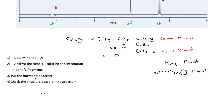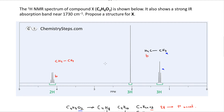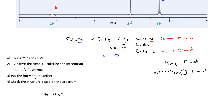Whenever you see a quartet and a triplet together, you should immediately think of an ethyl group — these two signals represent an ethyl group. Next, we have a singlet integrating for 3H, indicating a methyl group connected to a carbon that has no adjacent hydrogens, so there is no splitting. We identify this as another fragment: a CH3 singlet.